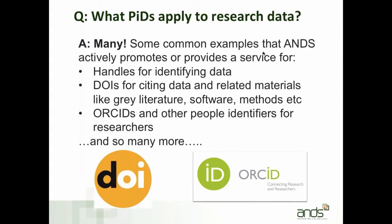What PIDs apply to research data is a very good question. There are many different types of persistent identifiers that apply to research data. I've put on the screen some common examples that ANS actively promotes or provides a service for — such as handles for identifying data, DOIs for citing data and related materials, or ORCIDs for people identifiers, and really so many more. These persistent identifier schemes differ in purpose — some apply generally to all scholarly resource types, some are discipline specific. The underlying technology differs, as does the governance structure — some are non-profit, some are company driven. Metadata requirements also vary, as does extent of use and uptake.